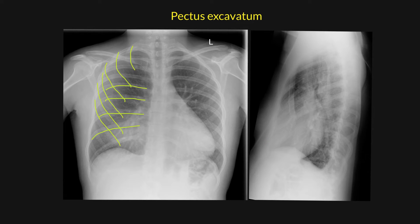It should be noted, however, that this diagnosis should actually be made clinically, simply because it can be made clinically, and to do a lateral chest radiograph is unnecessary radiation. So, coupled with an x-ray that appears like this, with a patient who clearly has pectus excavatum clinically, this is all that is required.